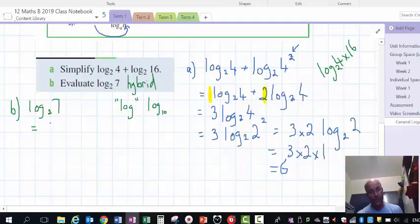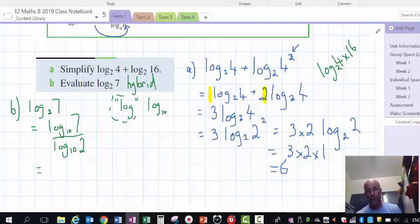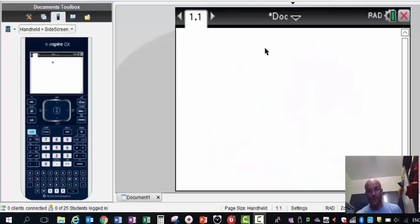So we're going to do it that way. Now, change of base rule will do that. So that will be log of 7 over log of 2. Now I could write base 10 there. I will, even though it's understood. If I didn't write it, you would just hit the log button and that would be the common log, log of base 10.